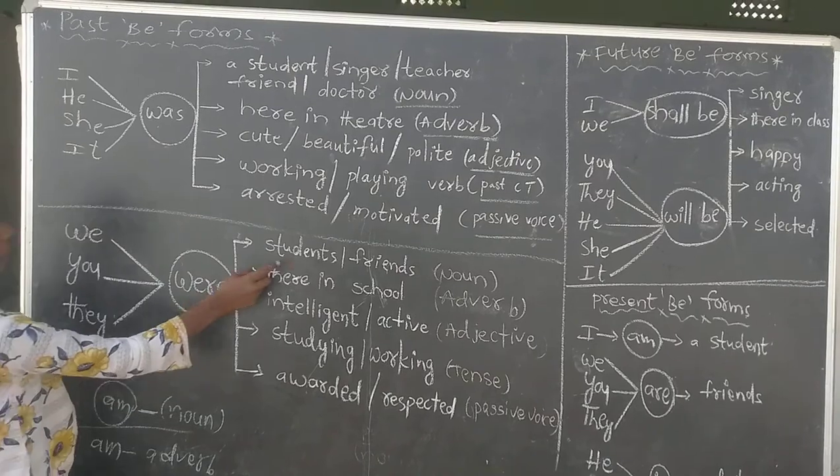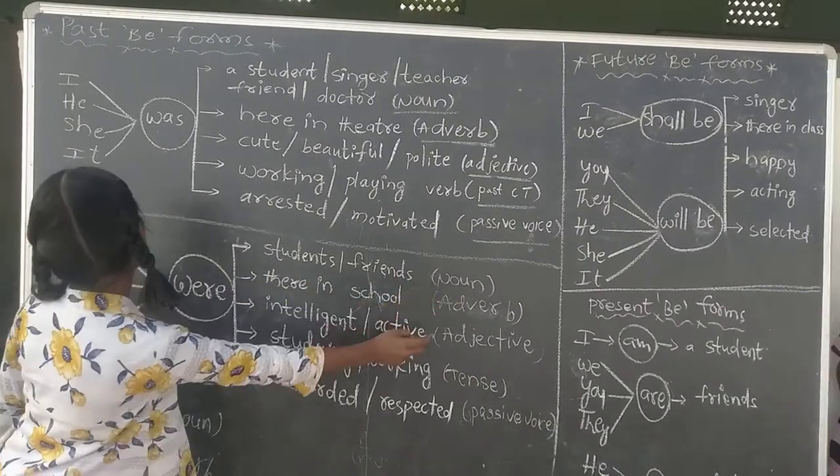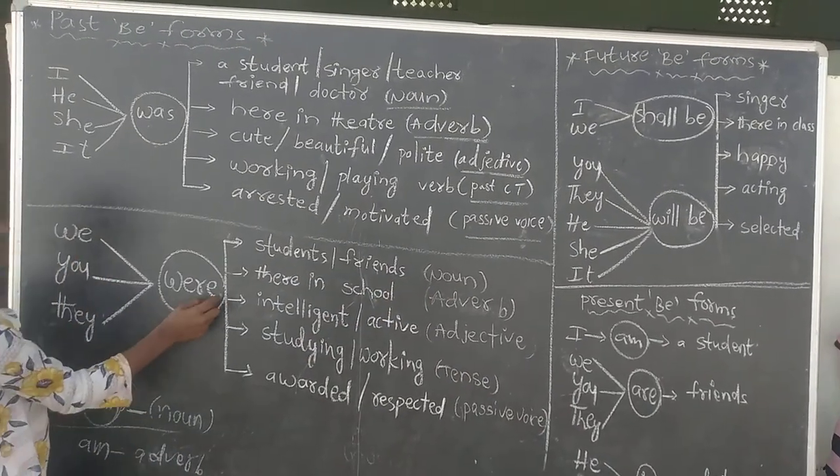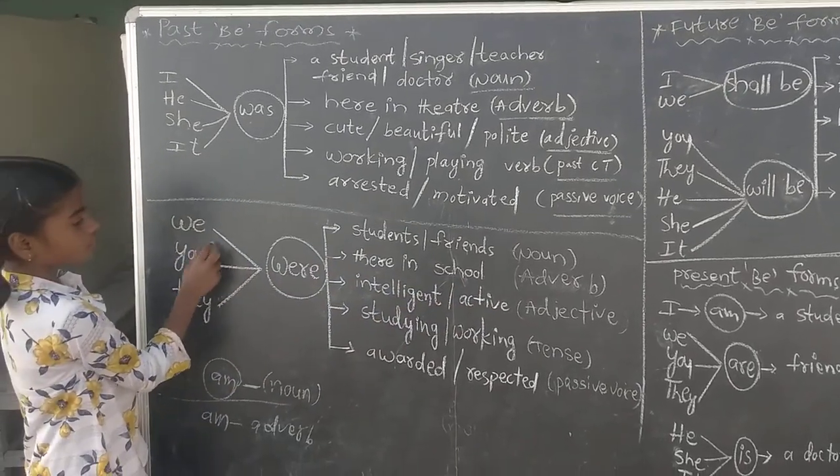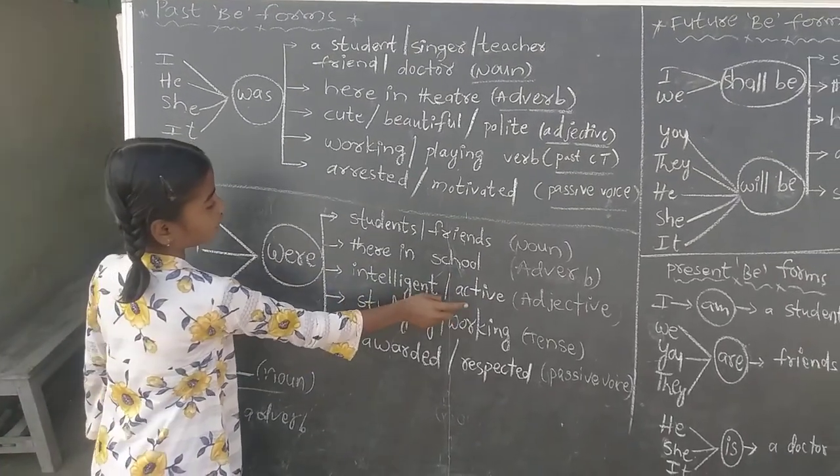We were students, friends, now. We were there in school, adverb. We were intelligent, objective.